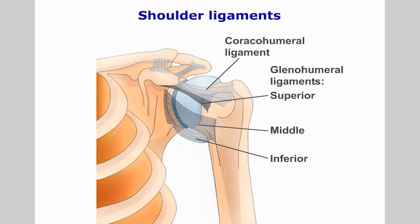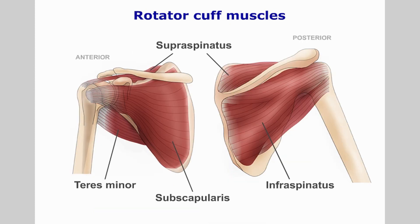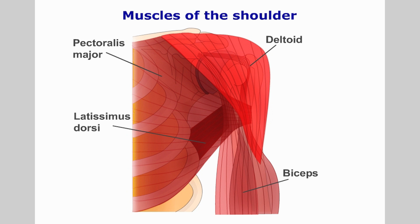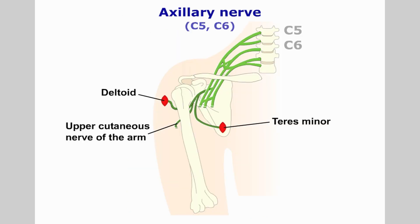It is supported by the glenohumeral and coracohumeral ligaments. It derives intrinsic muscular support from the rotator cuff muscles and further support from deltoid, biceps, pectoralis major and latissimus dorsae. It is innervated by the axillary and suprascapular nerves.